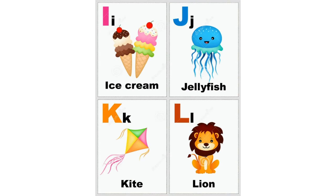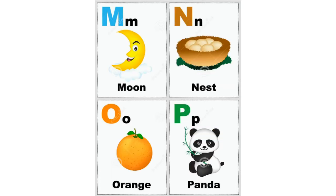J for jellyfish, K for kite, L for lion, M for moon, N for nest.